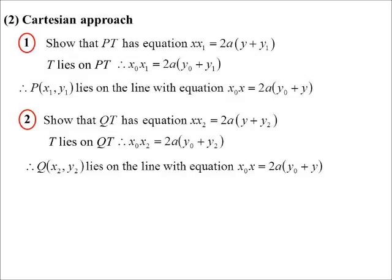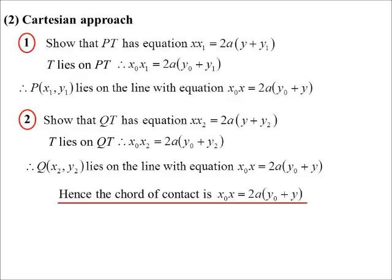But that's the same line that P lies on. So if P lies on the line and Q lies on the line, it must be the line PQ. So therefore, that's the equation of the chord of contact.